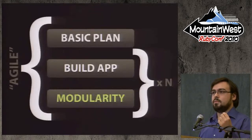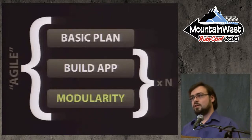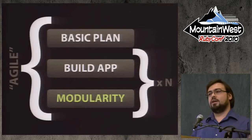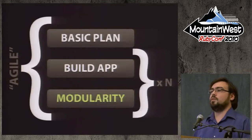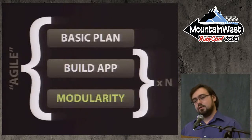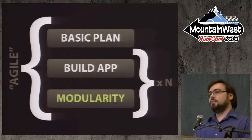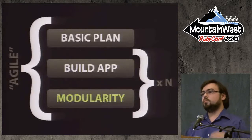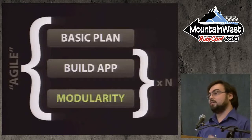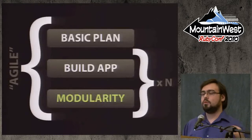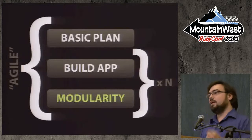I think Rails came to this party too late, but it would have been wrong for Rails to do it in version 0.5 or 1.0. Fundamentally, the way you build applications is you start with a plan and keep iterating until the lack of modularity is obviously hurting you — where you could move quicker if you start to decouple things.